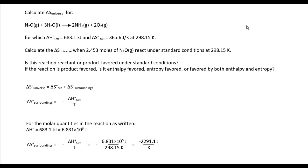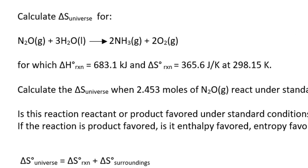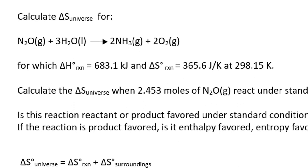Here, we're asked to calculate the ΔS_universe for this reaction. We are given the ΔH_reaction as a positive 683.1 kilojoules and the ΔS_reaction as a positive 365.6 joules per kelvin at standard conditions. So notice the ΔH value is not an enthalpy favored value because it is positive. Although the ΔS value is an entropy favored value, so through our calculations, we will see which one prevails in determining if the reaction is product or reactant favored.